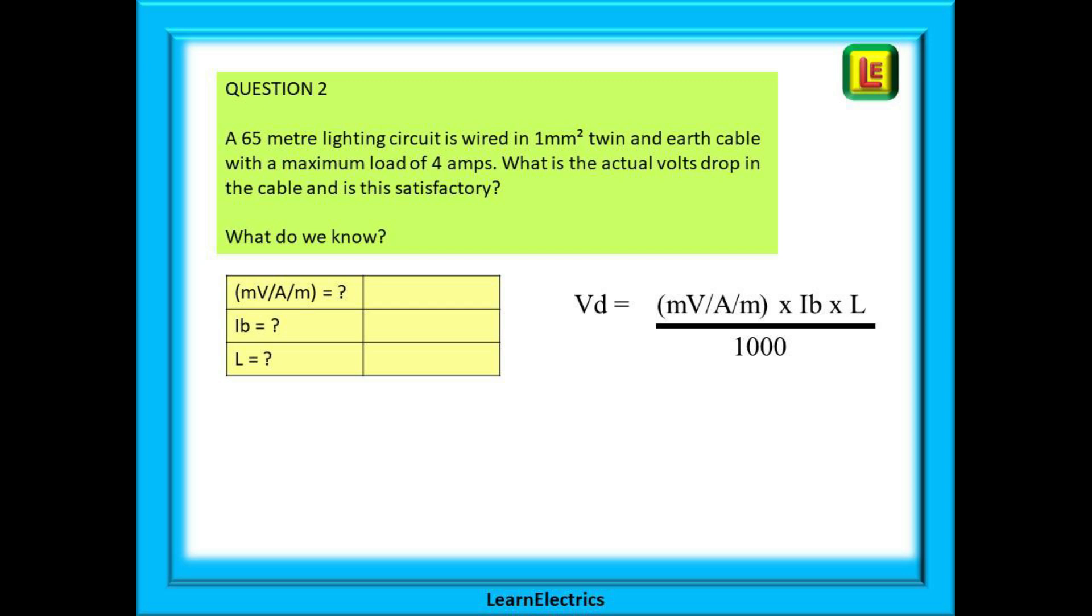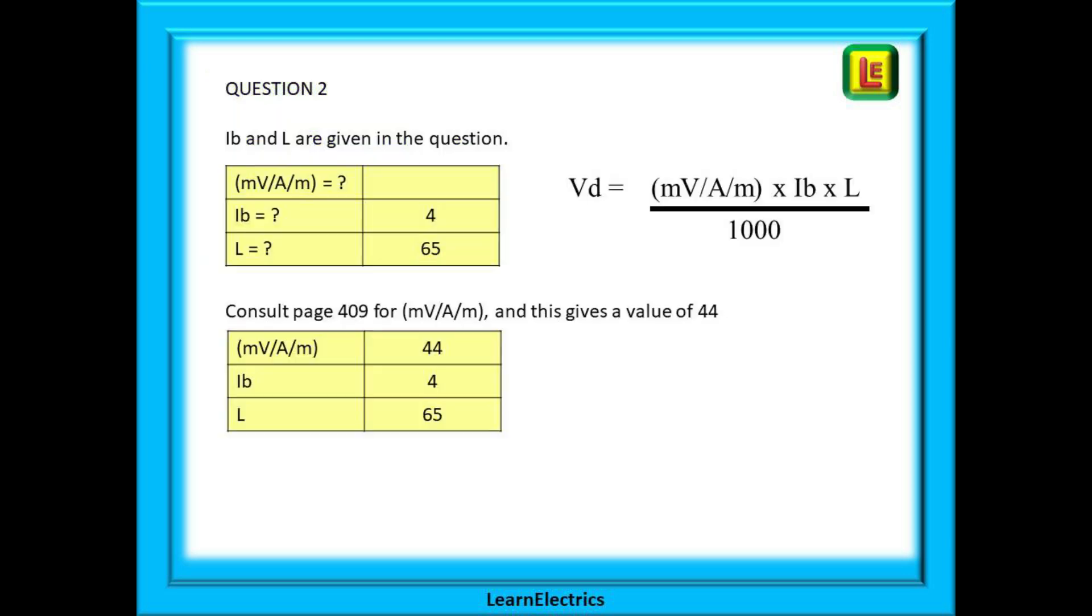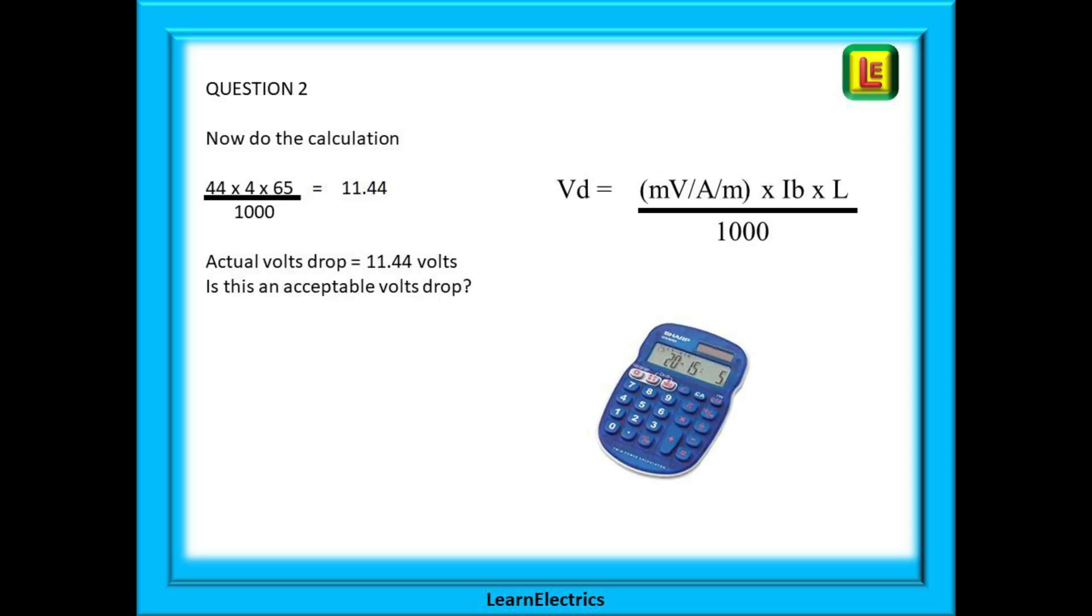Let's try another voltage drop question. A 65 meter lighting circuit is wired in one millimeter twin earth cable with a maximum load of 4 amps. What is the actual volts drop in the cable and is this satisfactory? Let's begin by writing down what we know. Ib, the current, is given in the question. The length is also given. Now look at page 409 for twin earth flat cables and find mV/A/m for one millimeter cable, and we find this is 44. Now do the calculation.